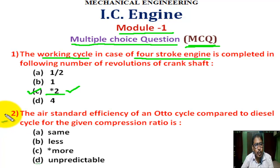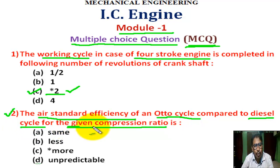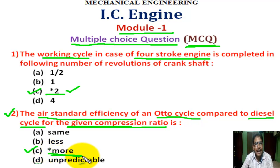Question number 2: The air standard efficiency of an Otto cycle compared to a diesel cycle for the same compression ratio. There are four options. Correct answer is C — more for Otto cycle. Air standard efficiency of the Otto cycle is more.